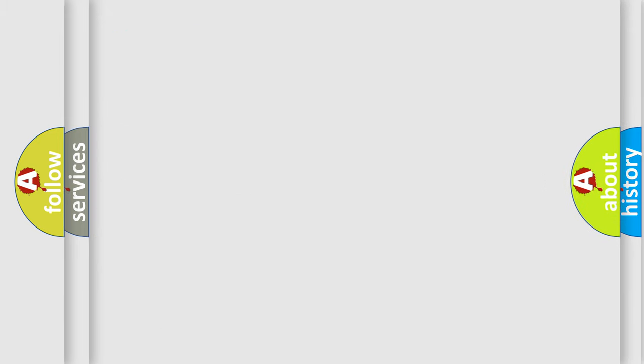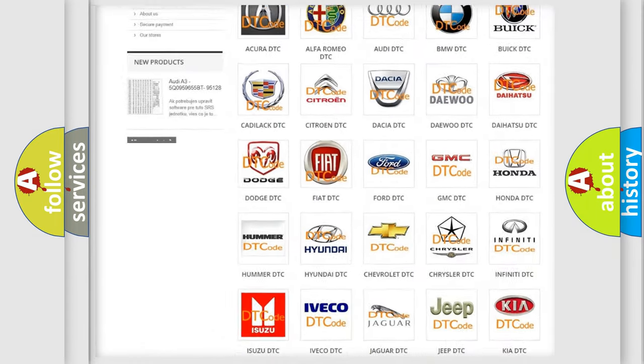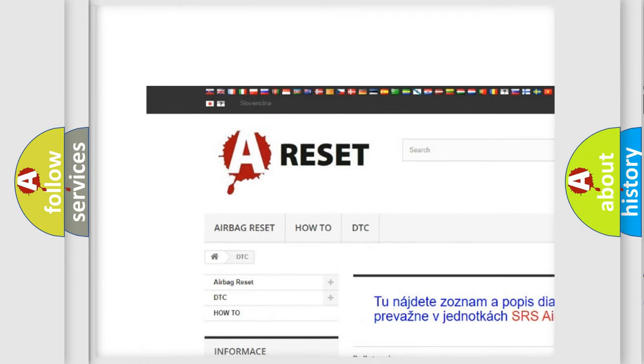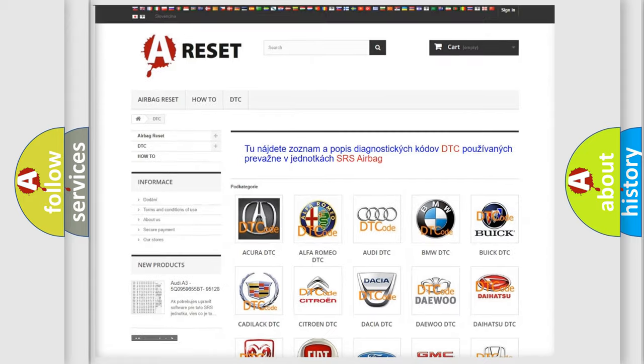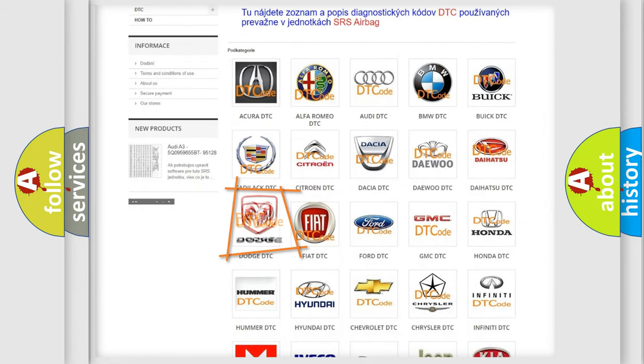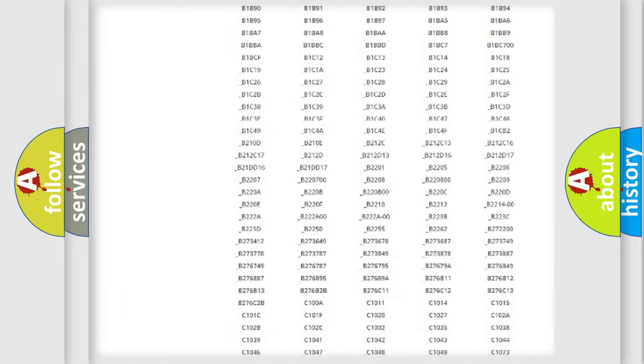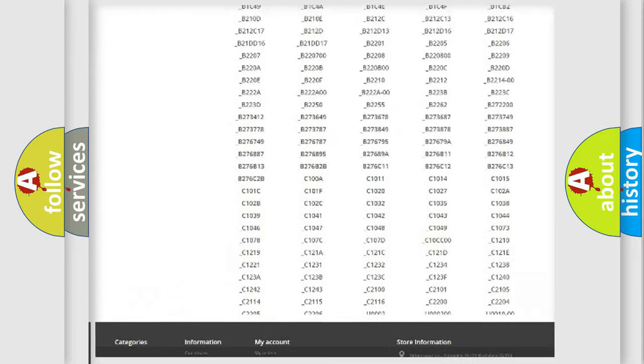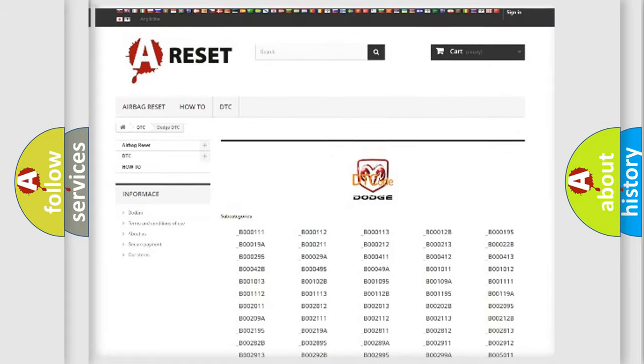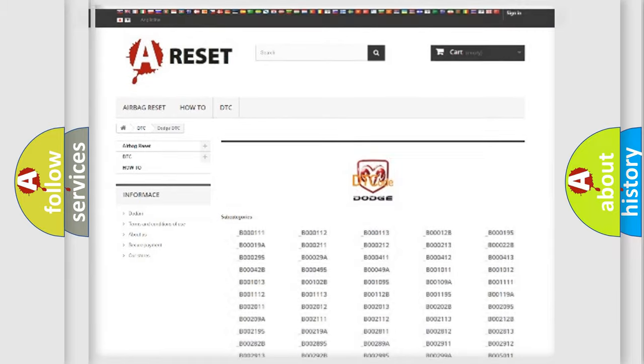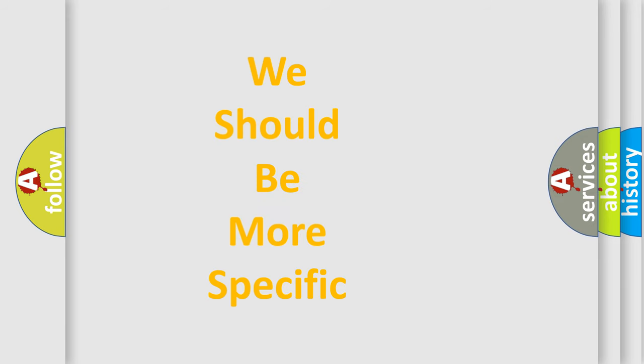Our website airbagreset.sk produces useful videos for you. You do not have to go through the OBD2 protocol anymore to know how to troubleshoot any car breakdown. You will find all the diagnostic codes that can be diagnosed in Dodge vehicles, also many other useful things. The following demonstration will help you look into the world of software for car control units.